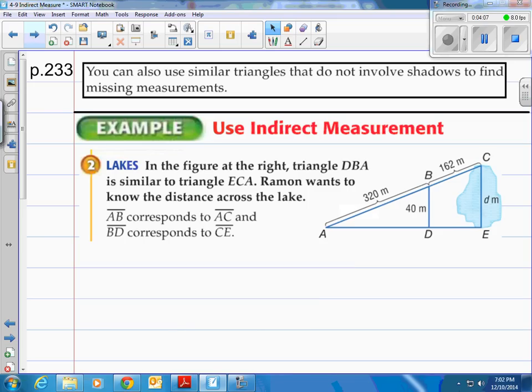All right you can also use similar triangles that do not involve shadows to find missing measurements. I call it the triangle within a triangle. Here's the indirect measurement method in this case.